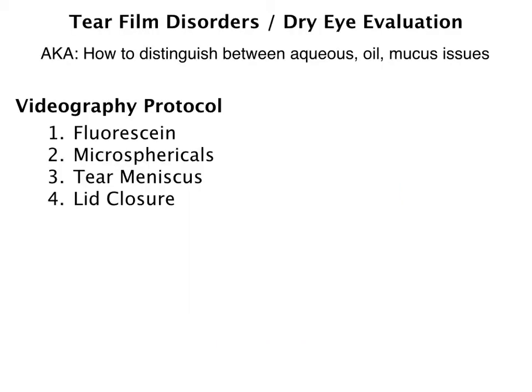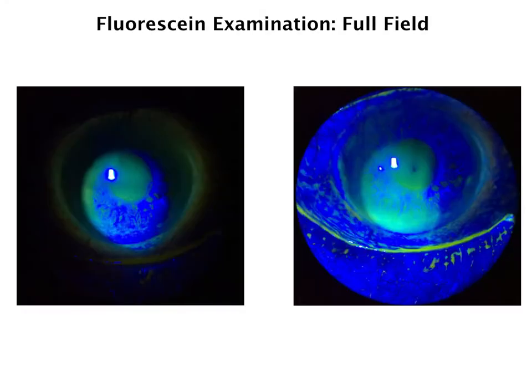Now let's talk about some tear film disorders or dry eye evaluation. I'm going to do a whole other video on this that goes into more detail, but I just wanted to go over some of the basics. I came up with a videography protocol where we look at fluorescein, the microsphericals, tear meniscus, and lid closure. The first thing is having the proper illumination for a fluorescein examination.